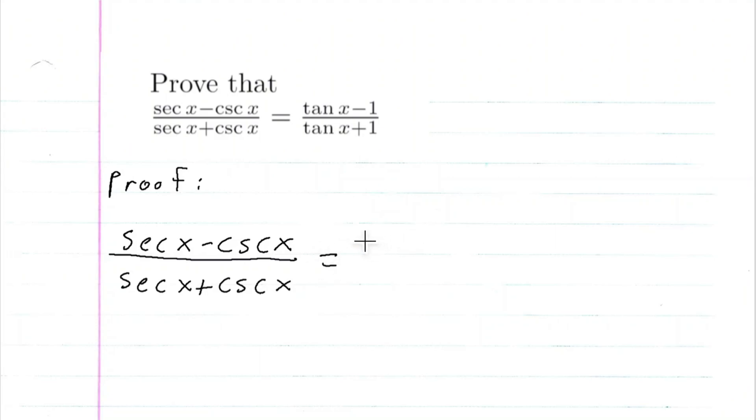We know this is equal to, so we know secant is the same thing as 1 over cosine, and cosecant is the same as 1 over sine. So I'm going to use that definition for all these. So secant is 1 over cosine x, minus 1 over sine x over 1 over cosine x plus 1 over sine x.